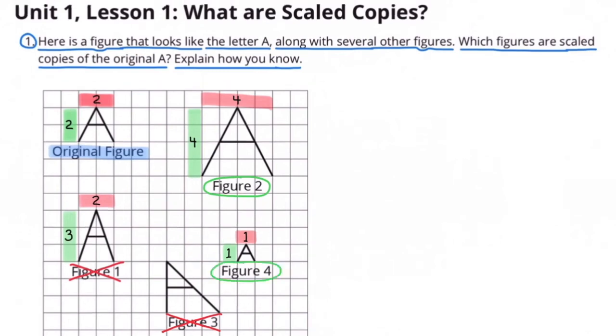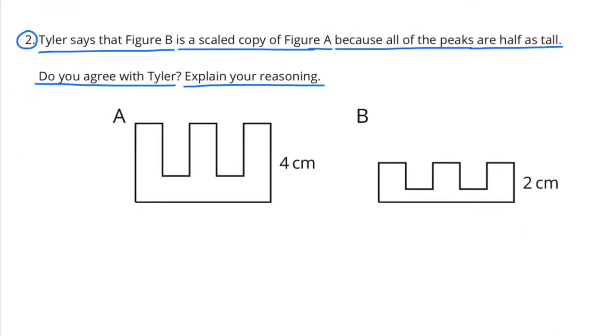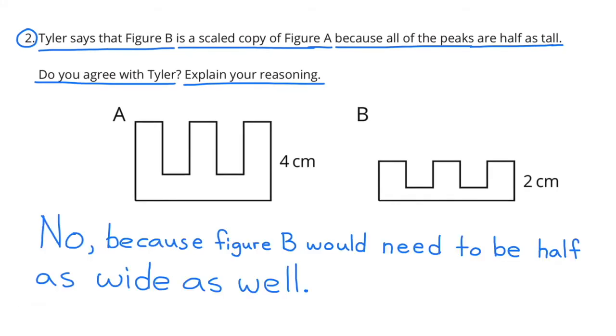Number two: Tyler says that Figure B is a scaled copy of Figure A because all the peaks are half as tall. Do you agree with Tyler? Explain your reasoning. No, I don't agree with Tyler, because Figure B would need to be half as wide as well as half as tall.